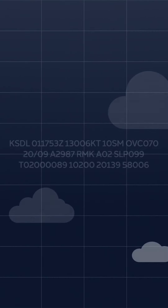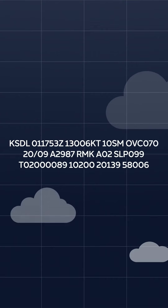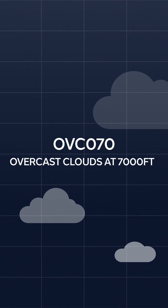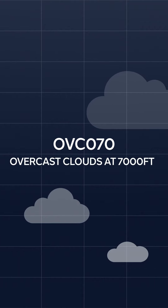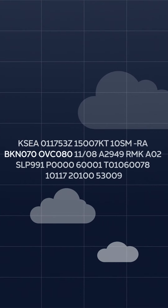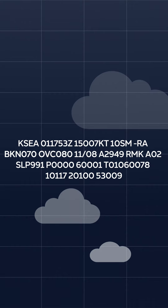Today in Scottsdale we have some cloud coverage, so let's take a look at the METAR. Right away we see OVC 070 — this tells me that the clouds are overcast at 7,000 feet, and by definition that would be our ceiling. Another great example is if we looked at the METAR for Seattle-Tacoma International Airport.